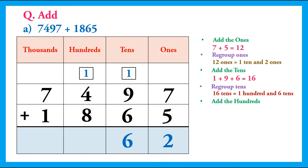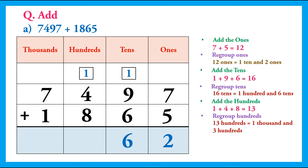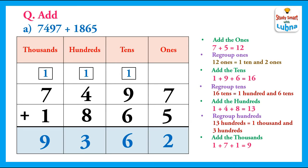After this we will add the hundreds. In the hundreds column we have 1 plus 4 plus 8, that is equal to 13. We will regroup the hundreds, write 3 in the hundreds column and carry 1 to the thousands column. Then 1 plus 7 plus 1 equals 9. So after adding 7497 and 1865 we have got 9362.